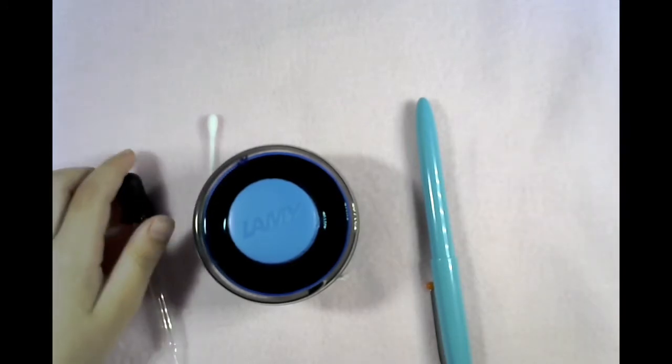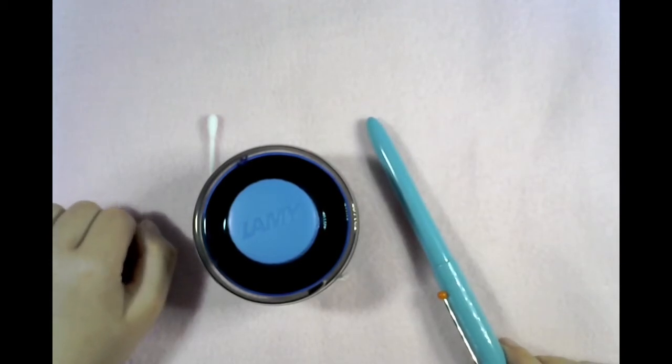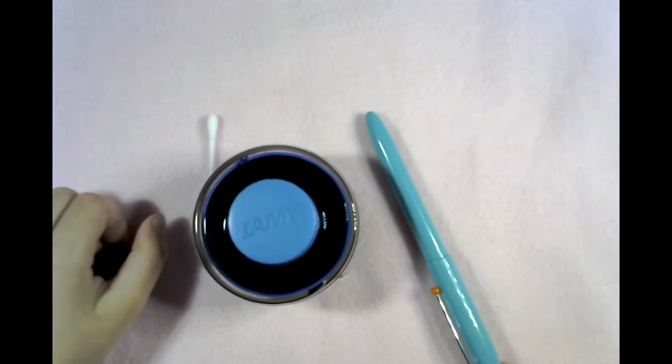It's called the Kako Retro. It came in a plastic box, kind of like the box that the Twisbi Fountain Pen came in but I can't find it right now.